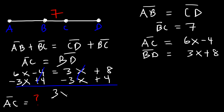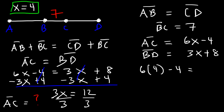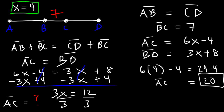Dividing both sides by 3, x equals 4. Now we can find AC: AC equals 6 times 4 minus 4, which is 24 minus 4, so segment AC is 20 units long. Once we have AC, we can find everything else. Since BC is 7, AB must be 13 because 13 plus 7 is 20. And CD must also be 13 because AB is congruent to CD.